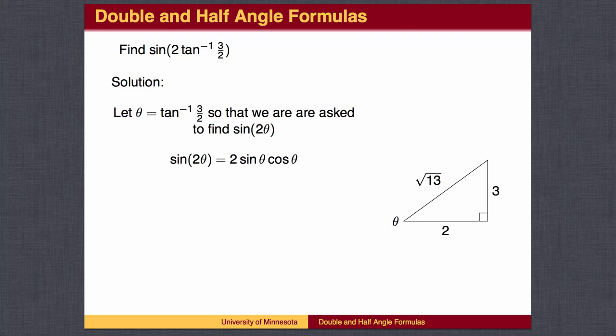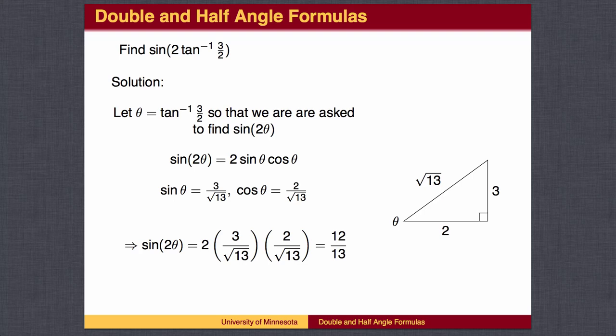The Pythagorean theorem finds the length of the hypotenuse. We then read the necessary values from the triangle and plug them into the formula.